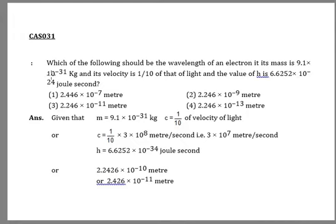Hello everyone. So today's question: Which of the following should be the wavelength of an electron if its mass is 9.1 × 10^-31 kg and its velocity is 1/10th of that of light, and the value of h is 6.6252 × 10^-24 joule second?